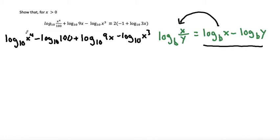we can put the x to the 4th on the top and the x to the 3rd on the bottom. I combine those because x to the 4th divided by x to the 3rd simplifies down to just x. So I can write that as log base 10 of x. So that simplified things a bit.